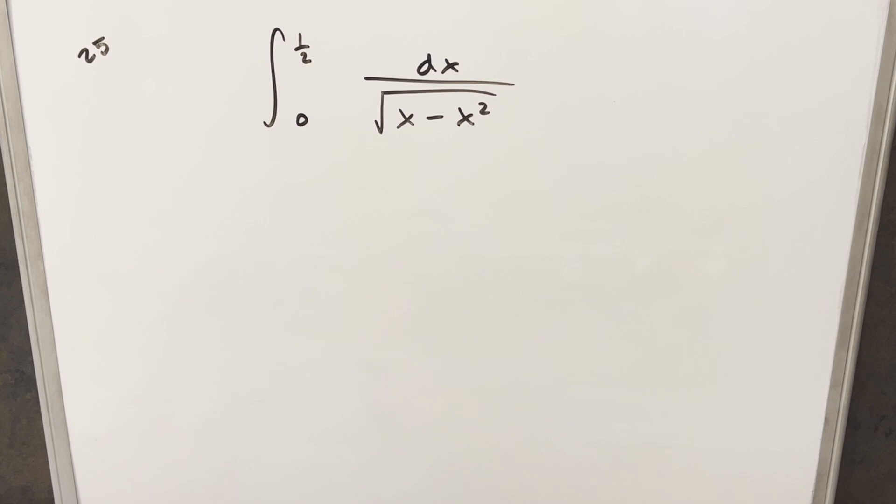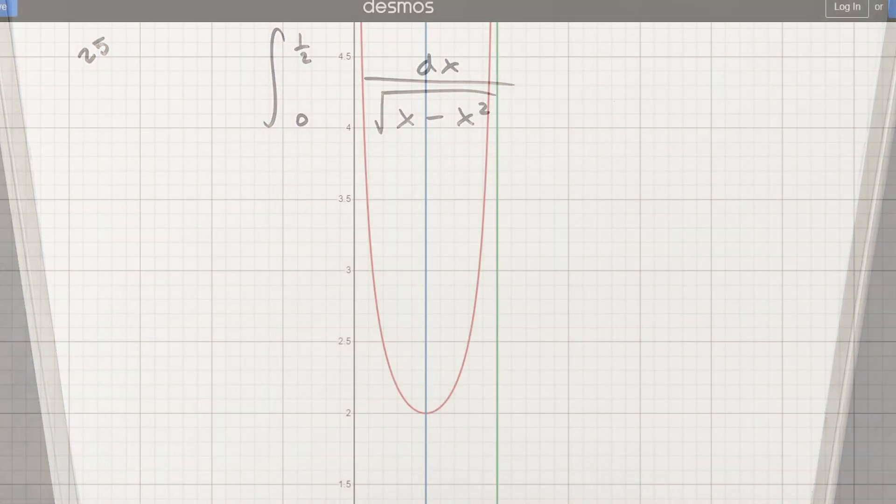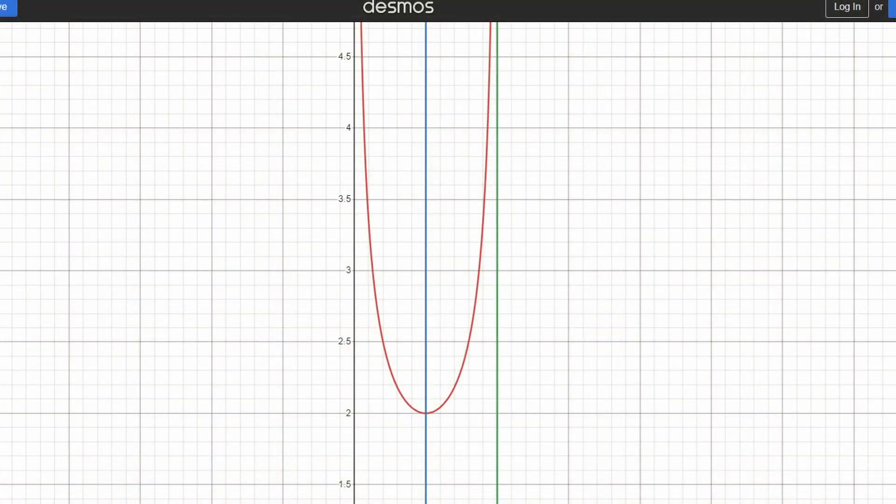I thought it would be interesting today to look at an alternative method for this one. I've already done this one on my other channel, so I'll provide a link to that. But what I wanted to do for this one is just look at the graph. Just looking at this graph, let's notice that it's symmetrical around x equals 1 half. And we also have a vertical asymptote at x equals 1.